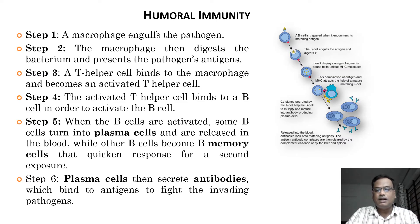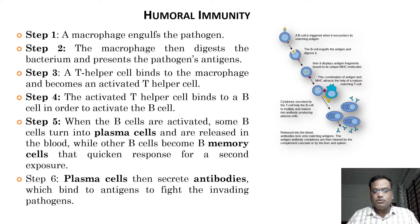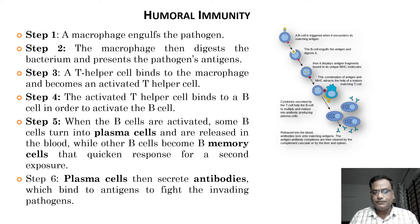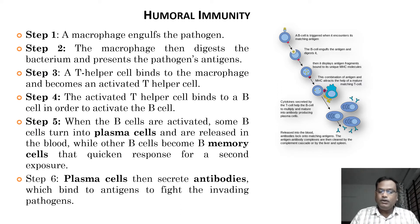Let us understand the steps of humoral immunity. Step one: a macrophage engulfs the pathogen. Once the pathogen enters the body fluids or blood, it is identified by the macrophage, which phagocytoses it. Step two: the macrophage digests the bacterium and presents the pathogen's antigens on its surface.